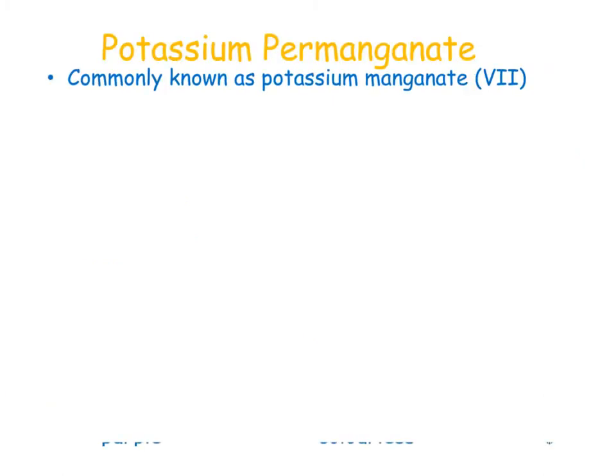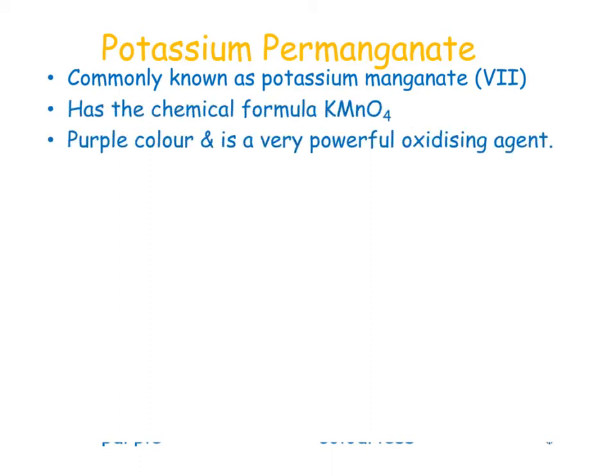First we'll look at potassium permanganate, sometimes referred to as potassium permanganate 7, which relates to its oxidation state. It has the chemical formula KMnO₄, is purple in color, and is a very powerful oxidizing agent. It's quite unstable — it decomposes in the presence of sunlight and must be standardized by titration against a primary standard.